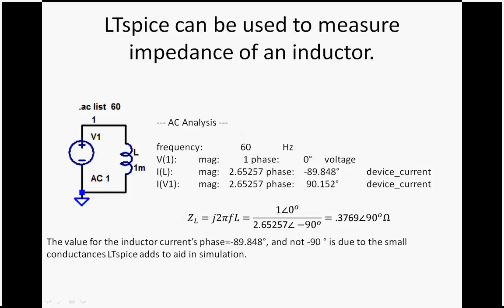We can do this for an inductor as well. Now in this case, the magnitude is 2.65 amps divided into the 1 volt. Something to point out is that this is very close to 90 degrees of phase, and the reason why it's not is that LTSpice adds conductances that you don't see that alter the phase somewhat.